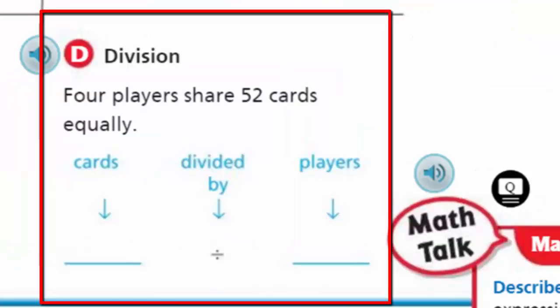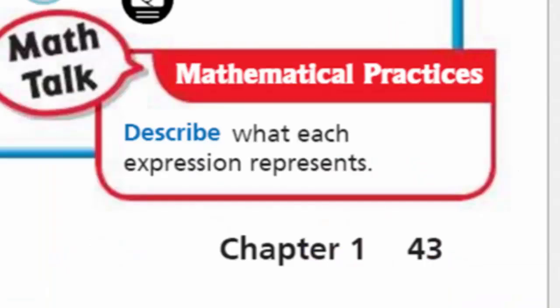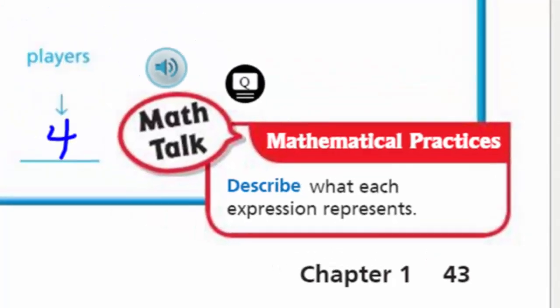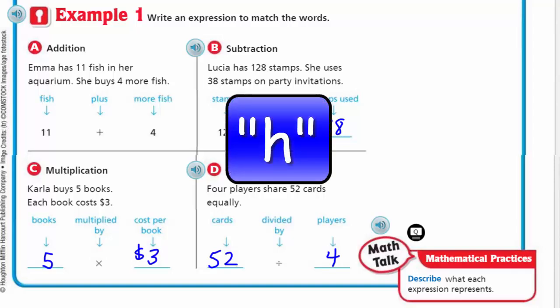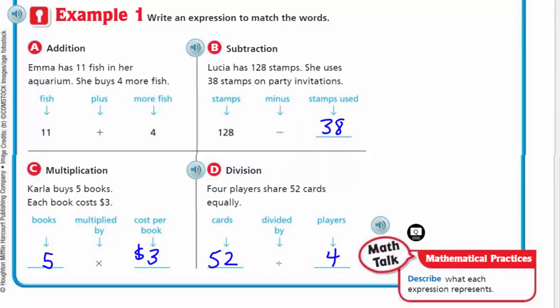But for D, now we have division. So 4 players share 52 cards equally. It's telling us the cards are 52, because that's our dividend. And they're going to be shared equally with, in this case, 4 players. Now it says Math Talk: Describe what each expression represents. Each expression is going to mean different things. Expression A represents the number of fish in her aquarium. Expression B represents the number of stamps Lucia will have left. Multiplication C represented the total cost of the 5 books. And D, division, represents how many cards each player is going to get.